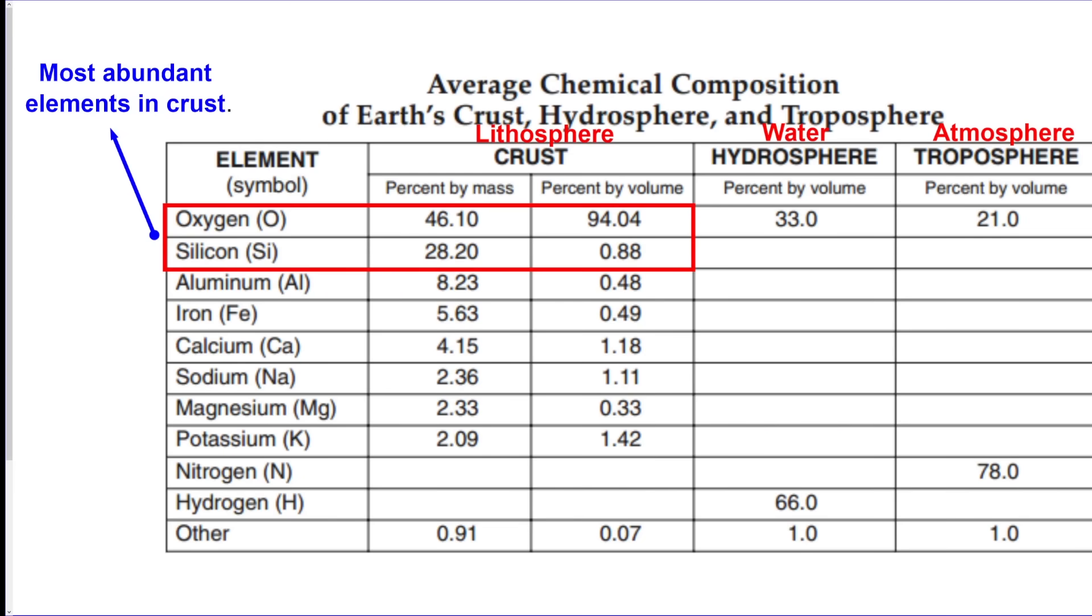We have this chart on page one of the reference table. You should know how to read it. It tells you about the crust, hydrosphere, and troposphere. I put the synonyms above those, and you should be able to read this, rank the most abundant elements in the crust by mass and volume.